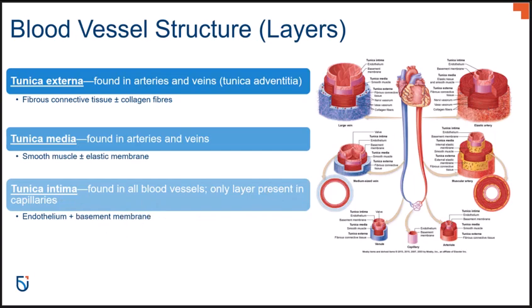The tunica intima is the innermost layer, meaning inside coat. It is made up of endothelium — endothelial tissue — that is continuous with the endothelium lining the heart. The endothelium has a basement membrane that supports it, and this layer is found in all vessels: arteries, veins, and capillaries. Both the tunica externa and the tunica media are found in arteries and veins.